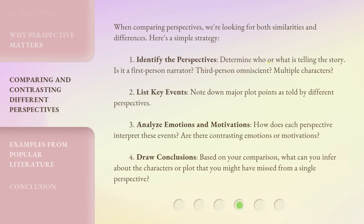When comparing perspectives, we're looking for both similarities and differences. Here's a simple strategy. 1. Identify the perspectives — determine who or what is telling the story. Is it a first-person narrator? Third-person omniscient? Multiple characters? 2. List key events — note down major plot points as told by different perspectives. 3. Analyze emotions and motivations — how does each perspective interpret these events? Are there contrasting emotions or motivations? 4. Draw conclusions — based on your comparison, what can you infer about the characters or plot that you might have missed from a single perspective?